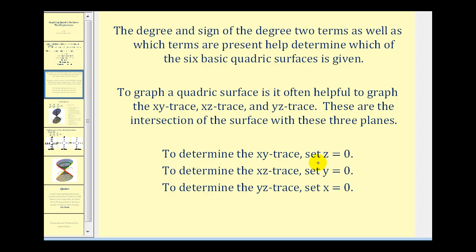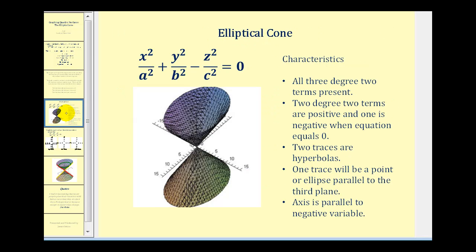Sometimes when we determine a trace, it's just a point. But if we determine a trace that's parallel to the given plane, we can often find a better trace. Let's take a look at the equation of an elliptical cone. Here's the form the equation will take when the graph will be an elliptical cone. Notice it's equal to zero instead of equal to one.